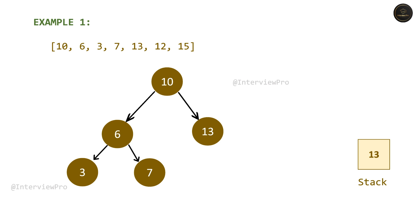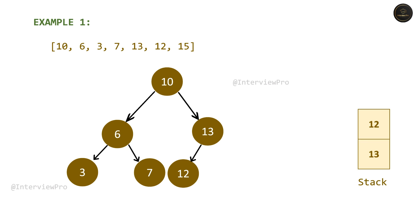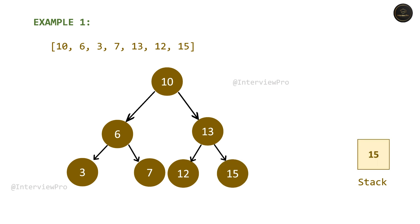Now we have node 12, which falls to the left of root node 13. So insert 12 and push it onto the stack. Then we have 15. To insert 15, we have to go back from 12 to 13, removing all references related to the left side and root of the subtree from the stack. So remove 12 and also 13, then insert 15 and push it onto the stack. This is a proper binary search tree pre-order sequence since we reached the end of the array without any problems.